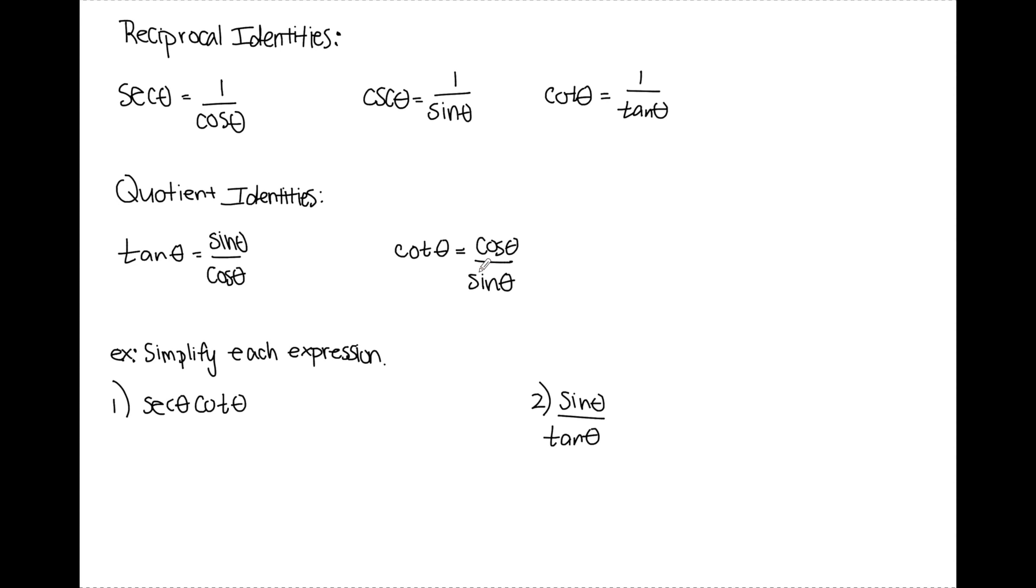Let's use some of these identities to simplify expressions. Down here I have simplify each expression. Number one says secant theta times cotangent theta.